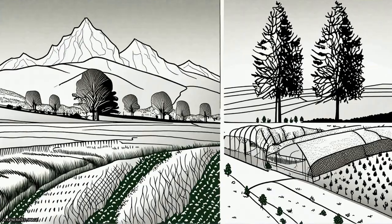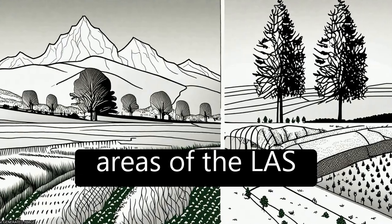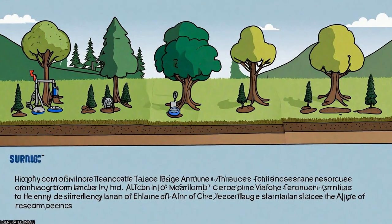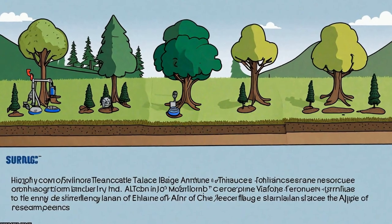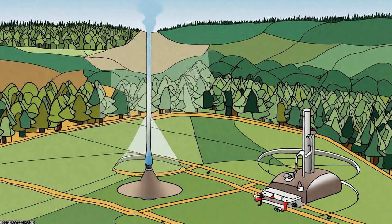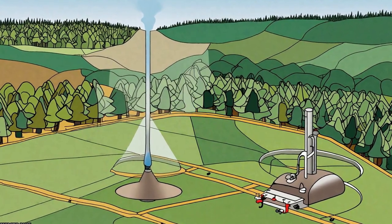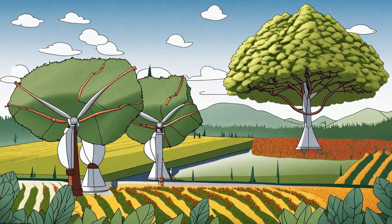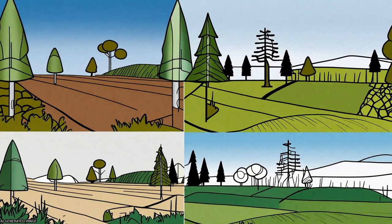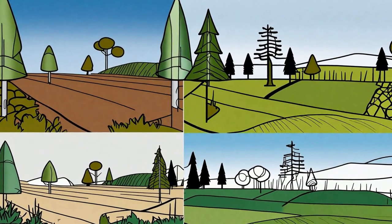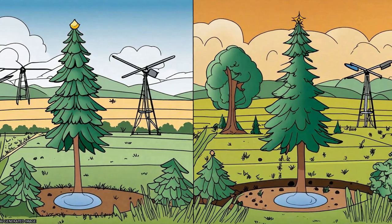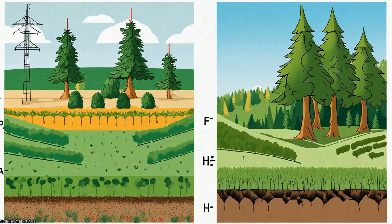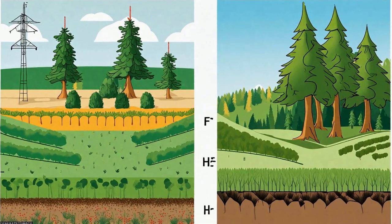The surface characteristics in the source areas changed with the season at each site, and there were characteristic seasonal variations in the energy balance components at all sites. During the growing season, the latent heat flux dominated the energy budget, while during the dormant season, the sensible heat flux was the main term of the energy budget.